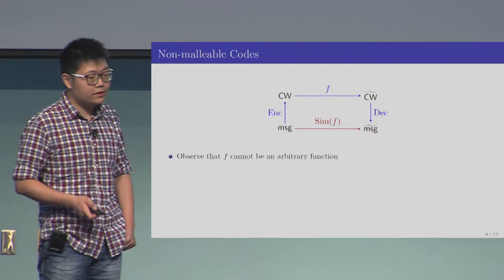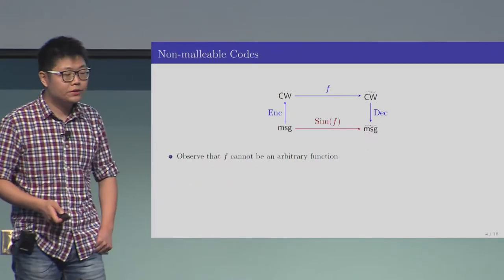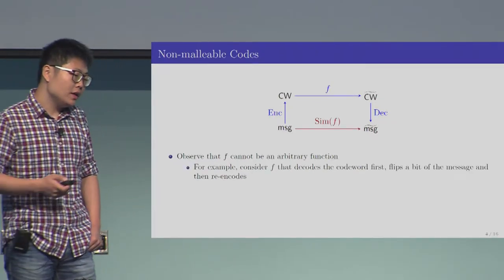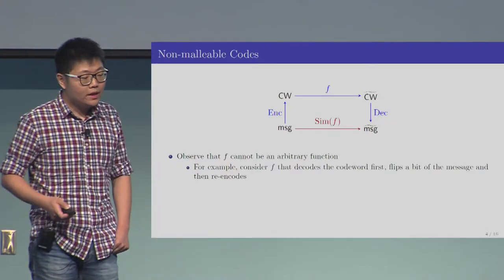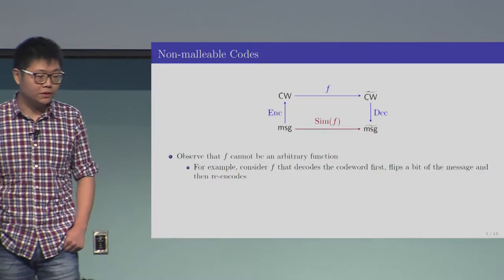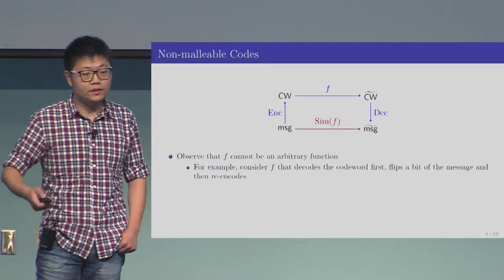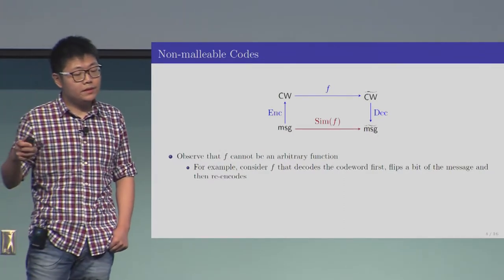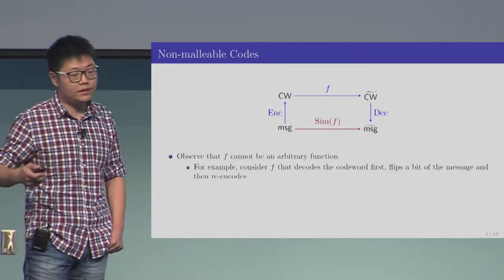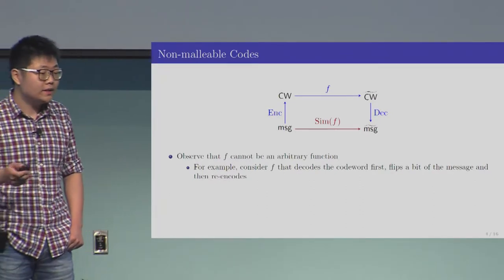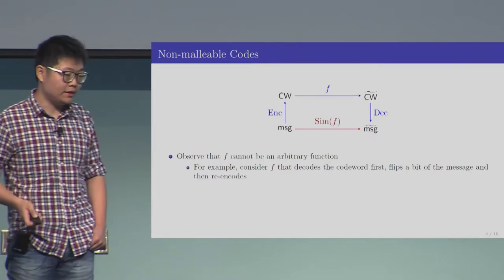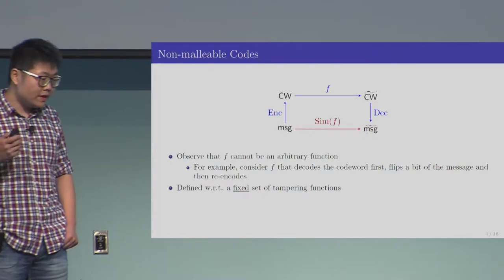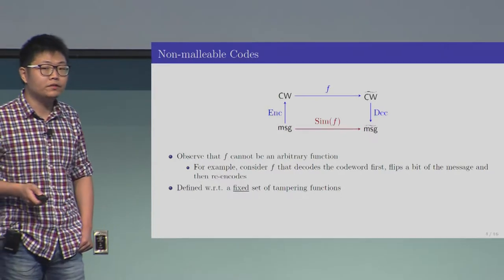If you think about this definition for a while, you will quickly realize that this tampering function cannot be an arbitrary function. The reason is very simple: since this is a coding scheme, the tampering function can always first decode the codeword, flip a bit of the message, and then re-encode. In this way, the tampered message will always be the original message with one bit flipped, and there cannot be any simulator that simulates this process. Therefore, non-malleable code is always defined with respect to a fixed set of tampering functions.